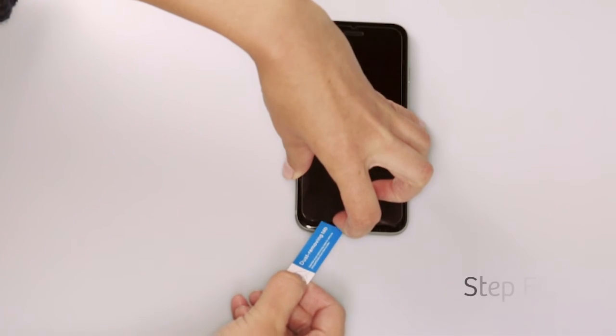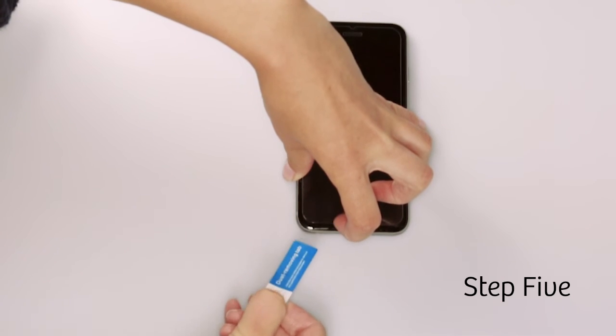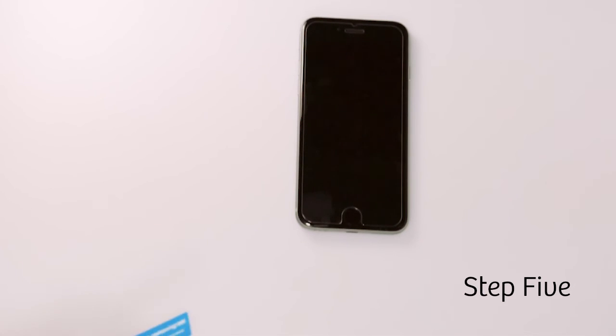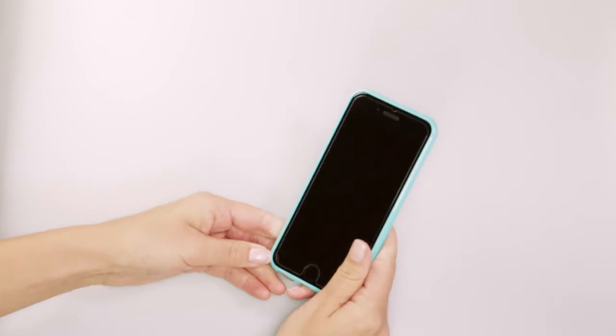Step five: if any dust particles remain under the glass, carefully lift the glass up starting at a corner and use the dust removing tabs to get rid of the dust. And you're done.